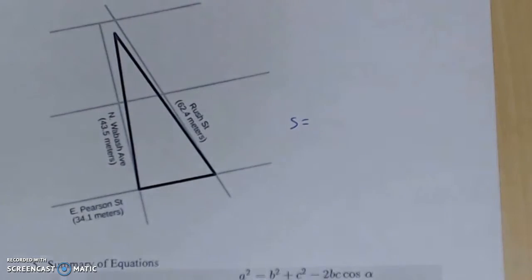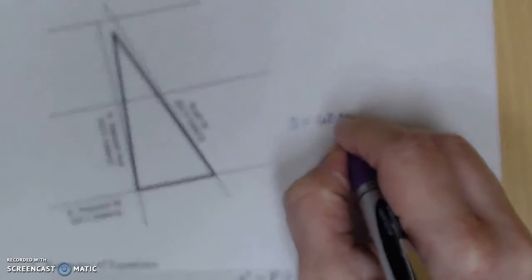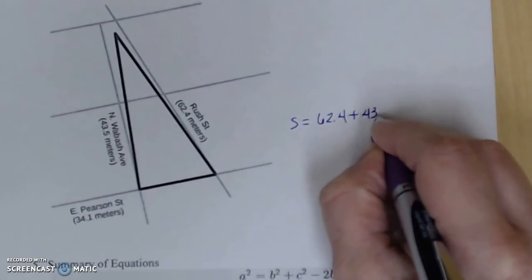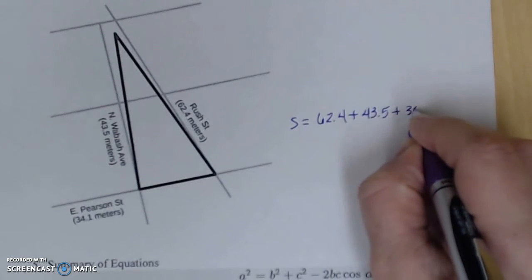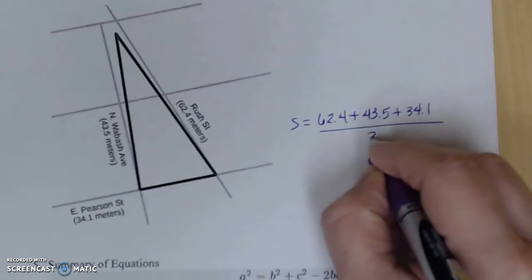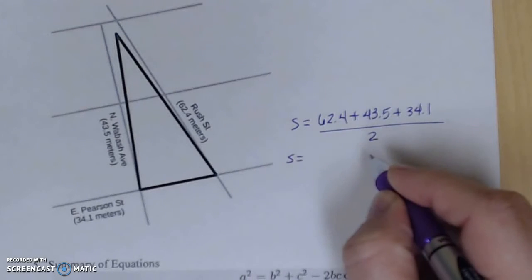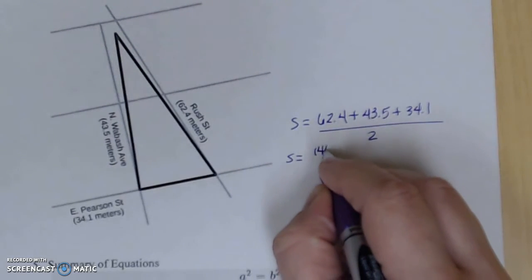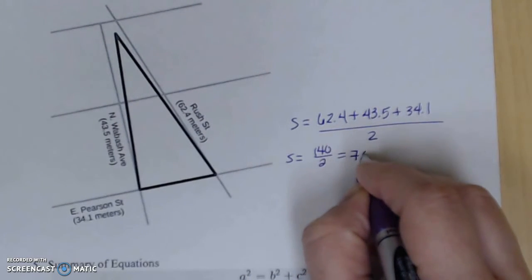First, I'm going to find the semi-perimeter. So 62.4 plus 43.5 plus 34.1, divided by 2. Using my calculator, I add all this up and get 140 divided by 2, which is 70.